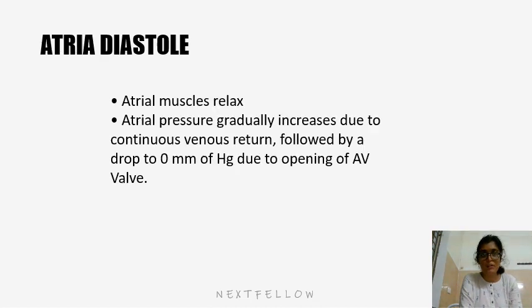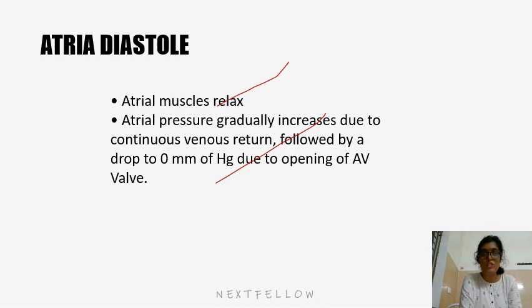Coming to atrial diastole: the atrial muscle relaxes and atrial pressure gradually increases due to continuous venous return, followed by a drop to zero upon opening of the atrioventricular valve.